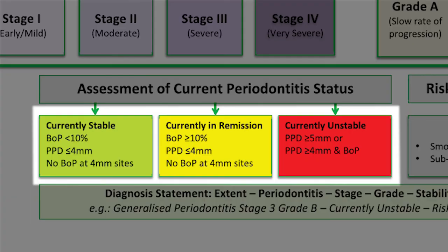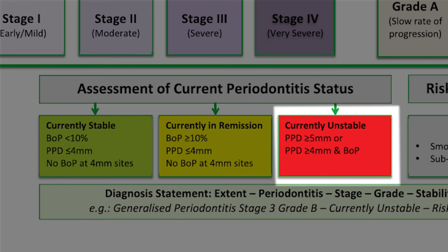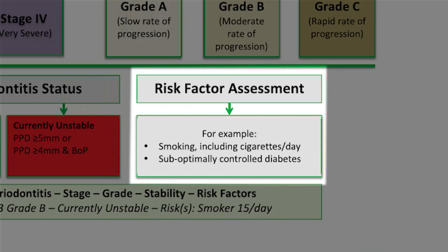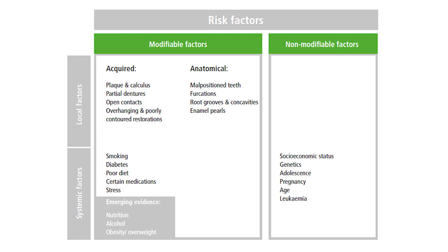Stability also needs to be assessed. It's important to note that anything with a pocket depth of more than or equal to five millimeters will always be classified as unstable — which is something many clinicians flag as a flaw in the classification, because if someone went from eight-millimeter pockets down to five millimeters, that's an amazing improvement, yet it still gets classified as unstable. Risk factors include things like smoking and diabetes, but you can pause here for a full list taken from the BSP guidelines. Combine everything you've found, and there you have your periodontal diagnosis.